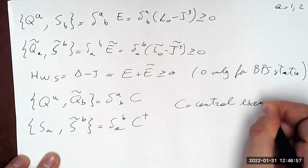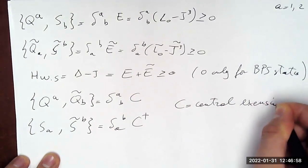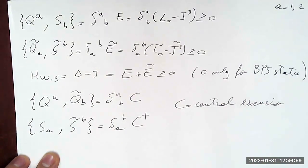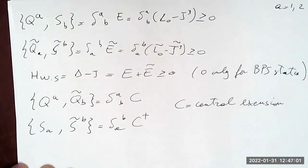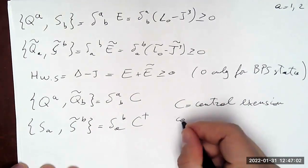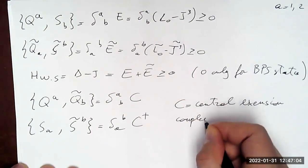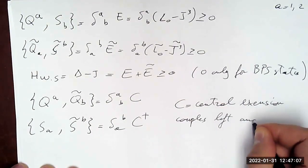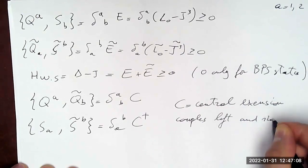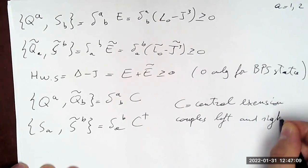The resulting algebra is very simple: we have two Q's with index a=1,2 and two S's, and the anticommutator {Q_a, S^b} gives a quantity E equal to L_0 - J_3. Since Q and S are conjugate to each other, E ≥ 0, and this is the BPS bound of PSU(1,1|2). There is a completely similar relation for the tilded sector. Consequently H_worldsheet = E + E-tilde = delta - J, which is also ≥ 0 and equals zero only for BPS states. When you compute the representation of this algebra on the fields semi-classically, you find a non-trivial commutator giving a central extension that couples the left and right sectors.